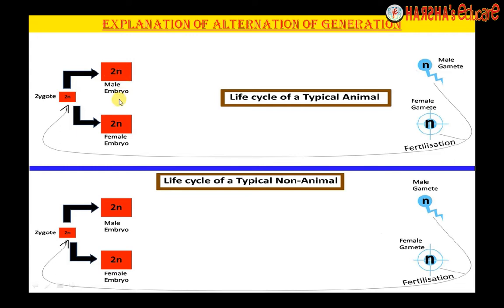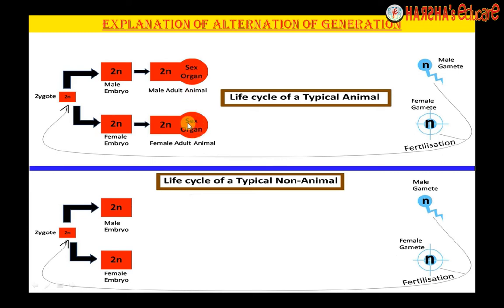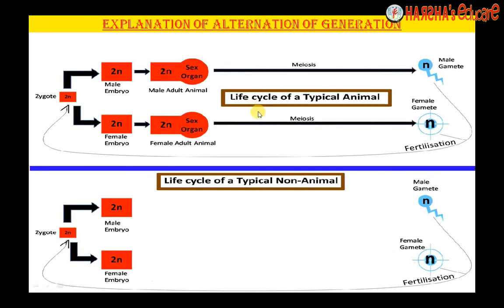In the animal life cycle, the embryo always develops into an adult. The adult animal bears a sex organ, and inside the sex organ meiosis takes place in certain cells only. Meiosis takes place in special cells of a tissue called the germinal epithelium. Some cells in the germinal epithelium get selected, undergo meiosis, and may further grow and undergo meiosis to produce the gametes. So the life cycle is very simple in the case of a typical animal.